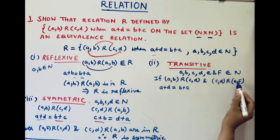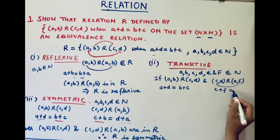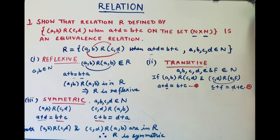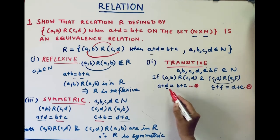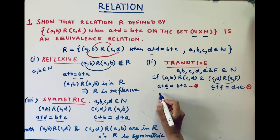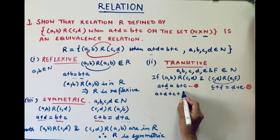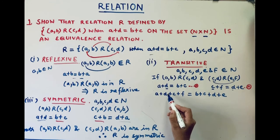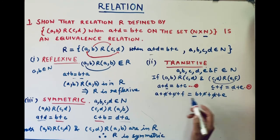Similarly, if (c,d) R (e,f), we can write c plus f equals d plus e — this is equation two. To prove transitivity, we add equation one and equation two. After adding, we get a plus d plus c plus f equals b plus c plus d plus e. We can cancel out c and d from both sides, giving us a plus f equals b plus e.